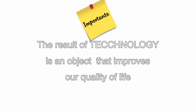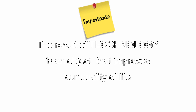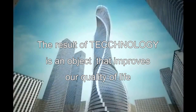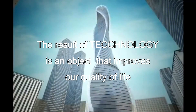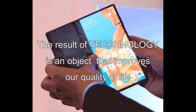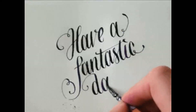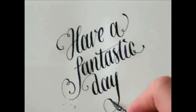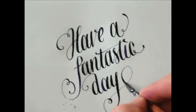For an engineer or an architect, the result of his or her work is an object: a building, a telephone, a simple pen. They do not need to write a book or a scientific article.